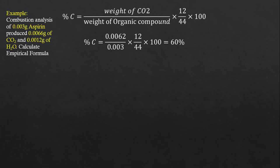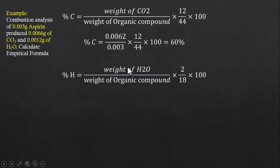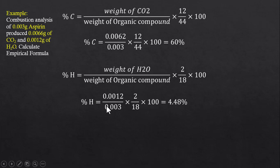The percentage of carbon comes out to be 60%. Similarly, the percentage of hydrogen can be calculated by putting the data of water and weight of organic compound into the formula, and this comes out to be 4.48%.